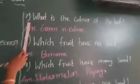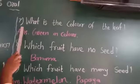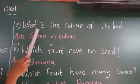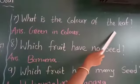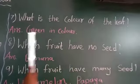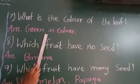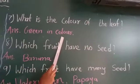Question number 7: What is the color of the leaf? Answer: Green in color.